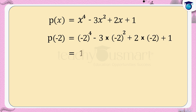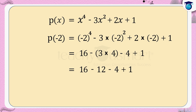This equals 16 minus 3 multiplied by 4 minus 4 plus 1, which equals 16 minus 12 minus 4 plus 1, equals 1. Therefore, the remainder is 1.